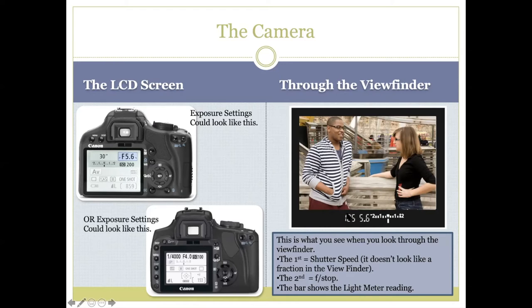In the viewfinder, the shutter speed is not shown as a fraction — it's just the bottom number. You have your f-stop, though the letter 'F' is not displayed; it should always appear in a consistent order. Take note of which comes first on your camera: the shutter speed or the f-stop. Then you have what is very important — your lifeline to taking a good exposure. This is called your light meter.